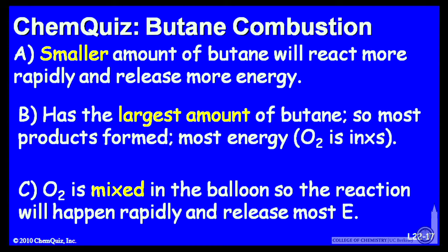Let's look at a possible explanation for each answer. A: a smaller amount of butane will react more rapidly and release more energy. B: has the largest amount of butane, so the most products formed and the most energy, because oxygen is in excess. Or C: oxygen is mixed in the balloon, so the reaction will happen rapidly and release the most energy. Think about those three and make a selection.